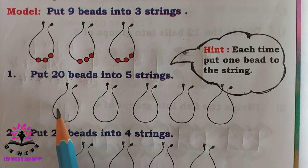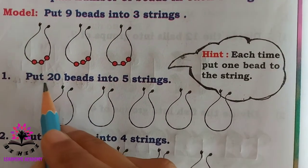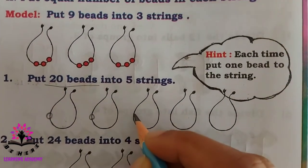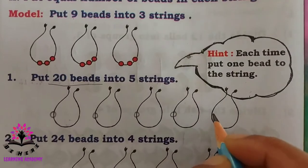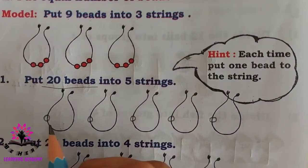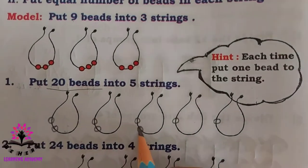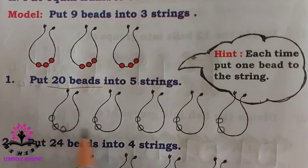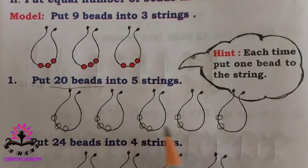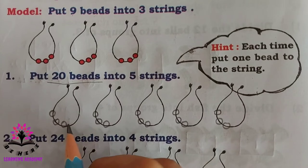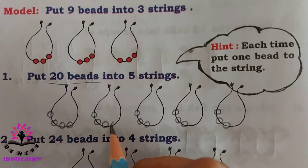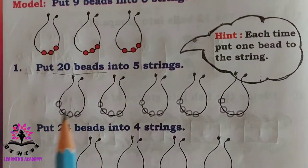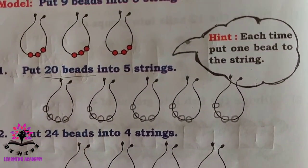There are twenty beads and five strings. Put one bead at a time into each string in turn. After distributing all twenty beads equally, each string has four beads. Total number of beads in five strings is twenty.